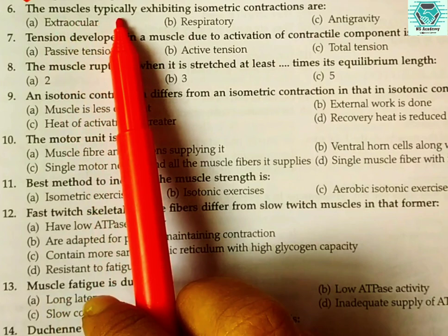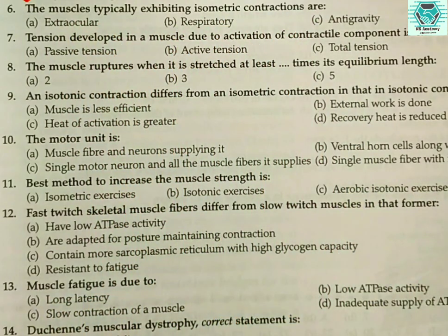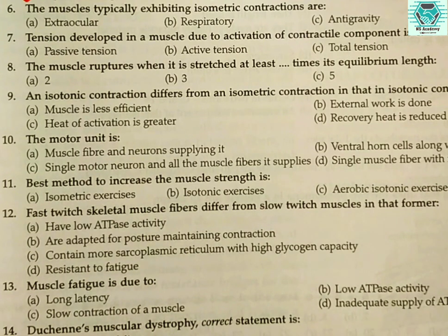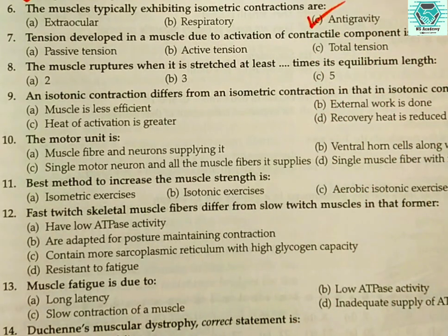Number six: the muscles typically exhibiting isometric contractions are — (a) extra-ocular, (b) respiratory, (c) anti-gravity, or (d) masticatory? In our next video I will discuss isometric and isotonic contraction in more detail. The right answer is (c), anti-gravity muscles.